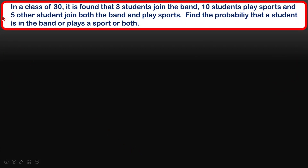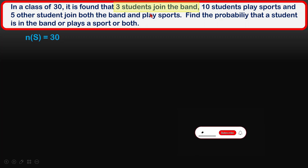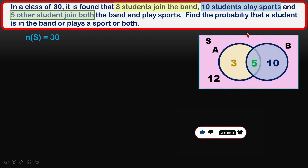In this next example: in a class of 30 students, it is found that 3 students join the band, 10 students play sports, and 5 other students join both the band and play sports. Find the probability that a student is in the band or plays a sport or both. The sample space is 30 students — we take directly from the question. It is best to draw a Venn diagram to help digest the information given.